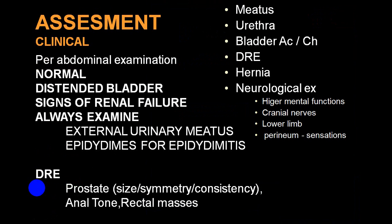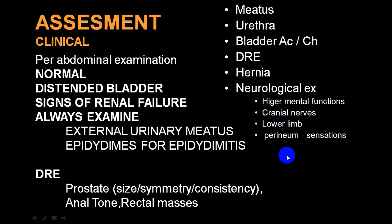Before catheterization, examine the abdomen for a distended bladder and signs of renal failure such as oliguria or retention. Examine the external urethral meatus and external genitalia including the epididymis for epididymitis. Perform a digital rectal examination for prostate enlargement, anal tone, rectal masses, and consistency. Also examine the meatus, urethra, and bladder, check for hernia, and assess for neurological damage to rule out neurogenic bladder.